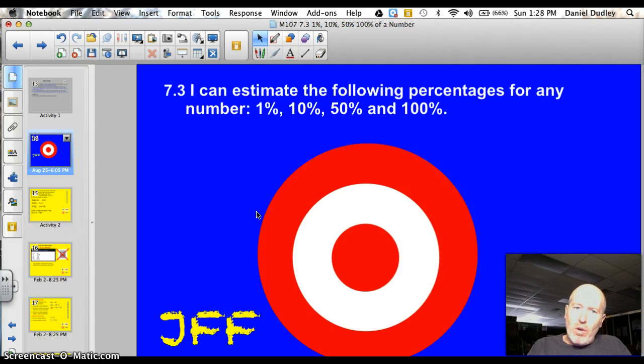Today, officially, our target is 7.3. I can estimate the following percentages for any number: 1%, 10%, 50%, 100%, and I'm even going to throw in 0.5% as an added bonus for today. Let's do this thing.